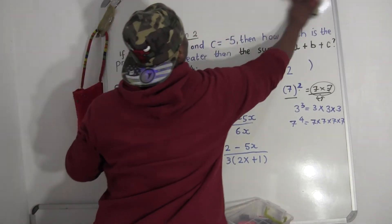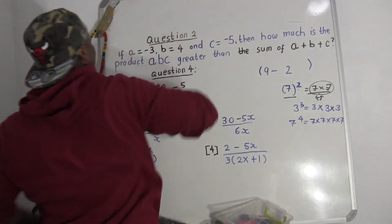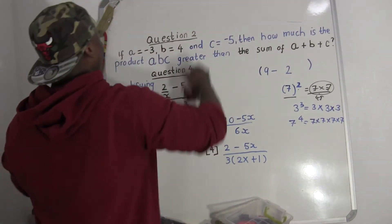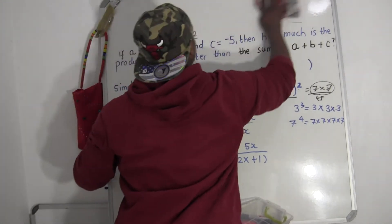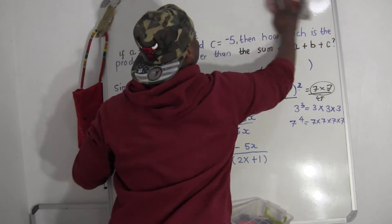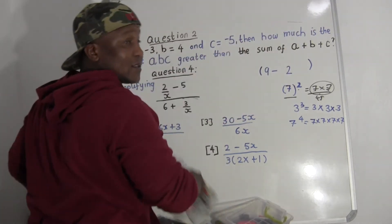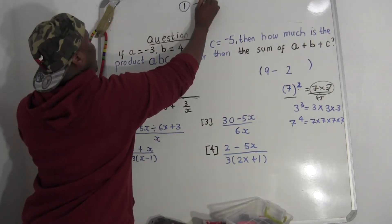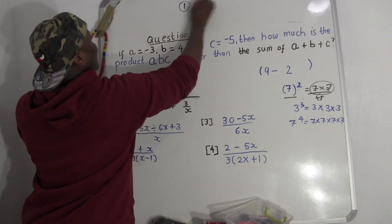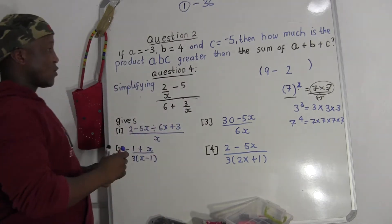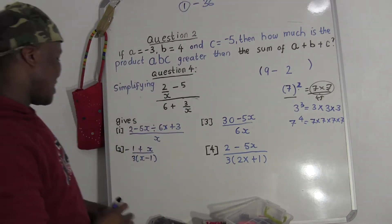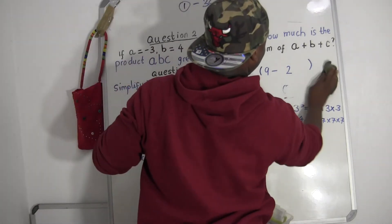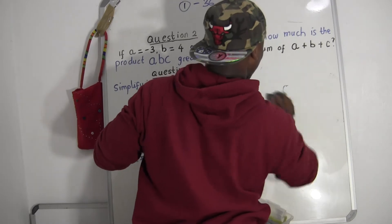Minus thirty-six is the answer for the first question. Now we go for the second question — the second question is more easy, actually. This is a question you can do quickly in a minute.